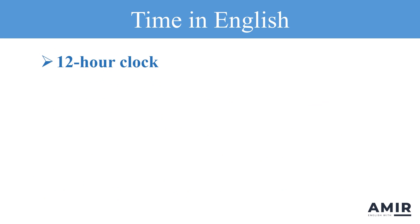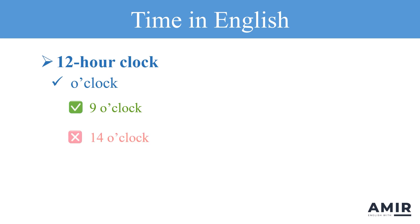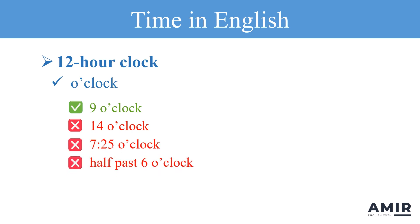Another common way to tell time is by using the term o'clock, which simply means 'according to the clock.' For example, when we say 9 o'clock, it means it's 9. O'clock is used only with the numbers 1 to 12, so we don't say 14 o'clock. We also don't use o'clock for times that include minutes or parts of an hour, so you wouldn't say 7:25 o'clock or half past 6 o'clock. Also, it's not common to use o'clock with a.m. or p.m., so instead of saying '8 o'clock a.m.,' we usually say '8 o'clock in the morning.'